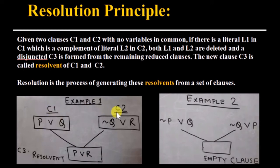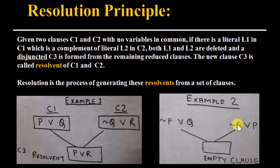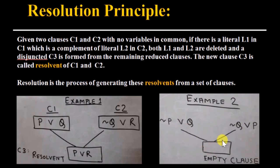So we derive new knowledge P OR R from C1 and C2; this new knowledge is called the resolvent. In example two, NOT P is the complement of P, and Q is the complement of NOT Q. When we resolve these two clauses, we get the empty clause. The empty clause indicates a contradiction — we cannot derive any new knowledge, and it shows that this is an inconsistent set of knowledge.